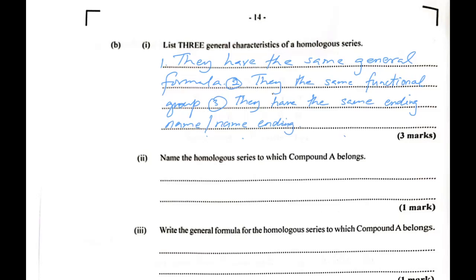Name the homologous series to which compound A belongs. So above we saw compound A. It had six carbons. There was no carbon-carbon double bond, only carbon-carbon single bonds and carbon to hydrogen single bonds. So that component is from the alkanes.